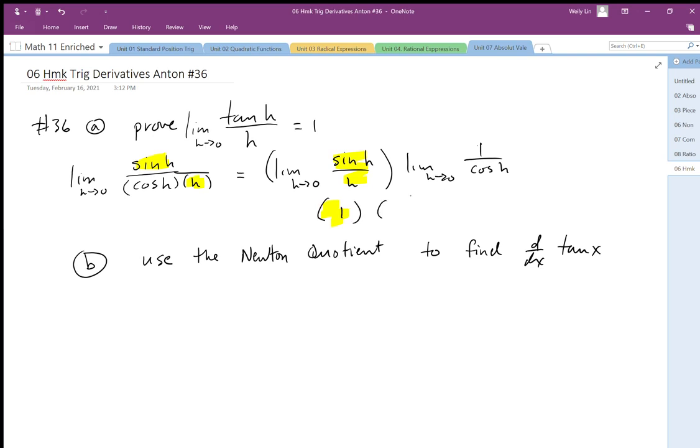Times the limit of 1 over cos 0. Cos 0 equals 1, so this equals 1.